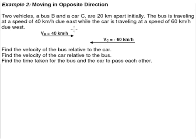Example two: moving in opposite directions. Two vehicles, a bus and a car, are 20 kilometers apart initially.